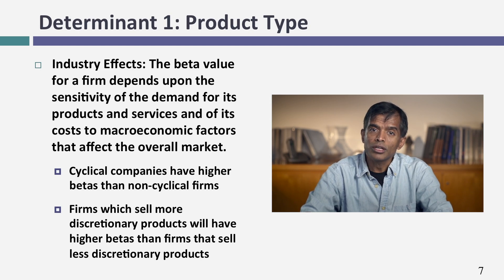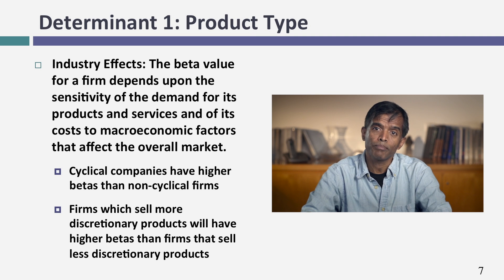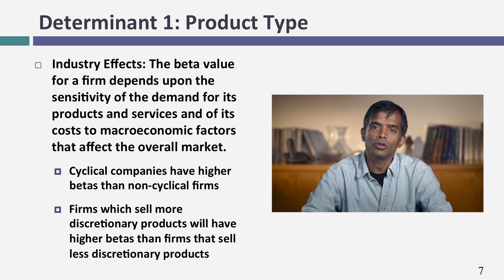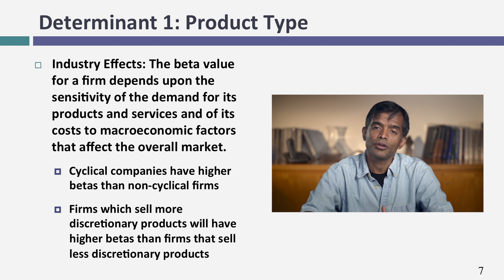So if you look at these examples, you can see the fundamentals that drive betas. There are only three choices you make as a company that determine your beta. The first: tell me what you do. The more cyclical your product or service, the higher your beta should be, because betas measure how you move with the market. Automobile companies and housing stocks should have much higher betas than food processing companies. The more discretionary your product or service, the higher your beta — in good times you sell more, in bad times you sell a lot less. So a luxury retailer like Gucci or Tiffany's should have a much higher beta than a discount retailer.